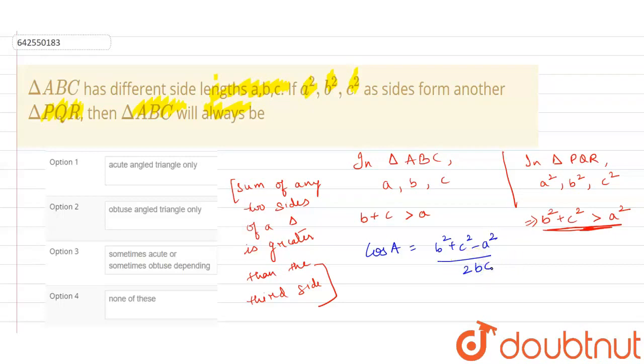So from here, after rearranging these terms, we will be getting 2BC cos A equals B square plus C square minus A square.